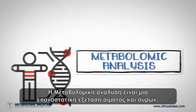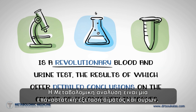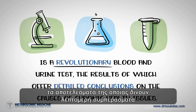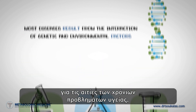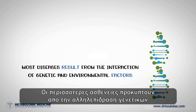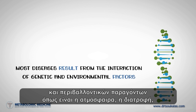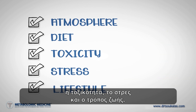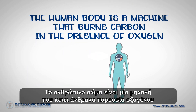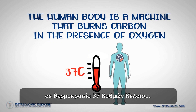Metabolomic analysis is a revolutionary nutritional blood and urine test, the results of which offer detailed conclusions on the causes of chronic health issues. Most diseases result from the interaction of genetic and environmental factors such as atmosphere, diet, toxicity, stress, and lifestyle. The human body is a machine that burns carbon in the presence of oxygen at 37 degrees Celsius.